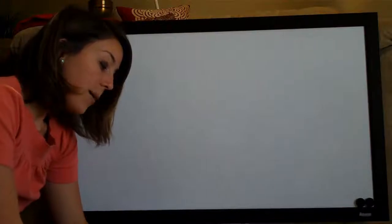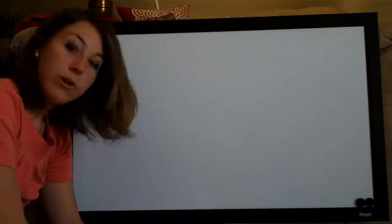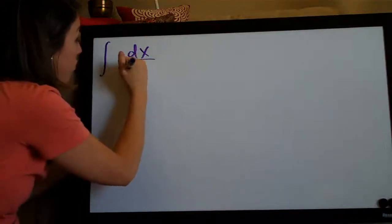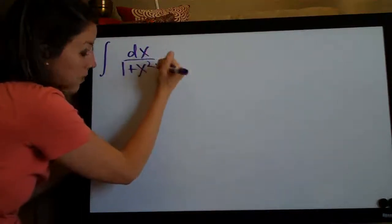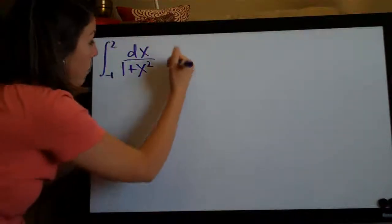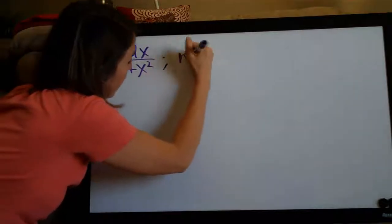We're going to be doing some trapezoidal rule problems today. The trapezoidal rule is one way to estimate the area under a graph or under the curve between the curve and the x axis. So the problem that we're given is the integral of dx over 1 plus x squared on the range negative 1 to 2 where n equals 6.